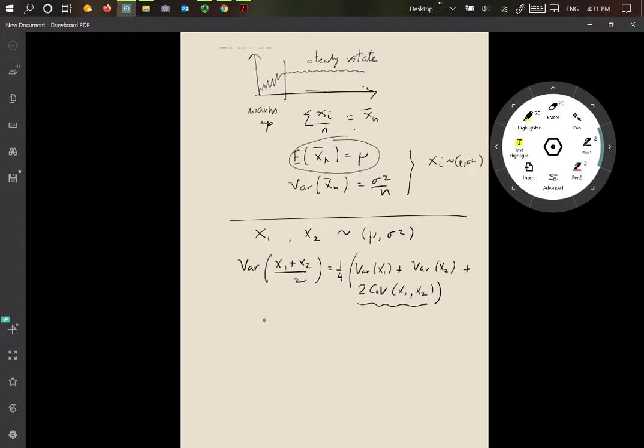And so what we want to do then is to find two variables, x1 and x2, such that they are distributed the same way, which is what we say over here, and however, they have negative covariance, so they're negatively correlated.